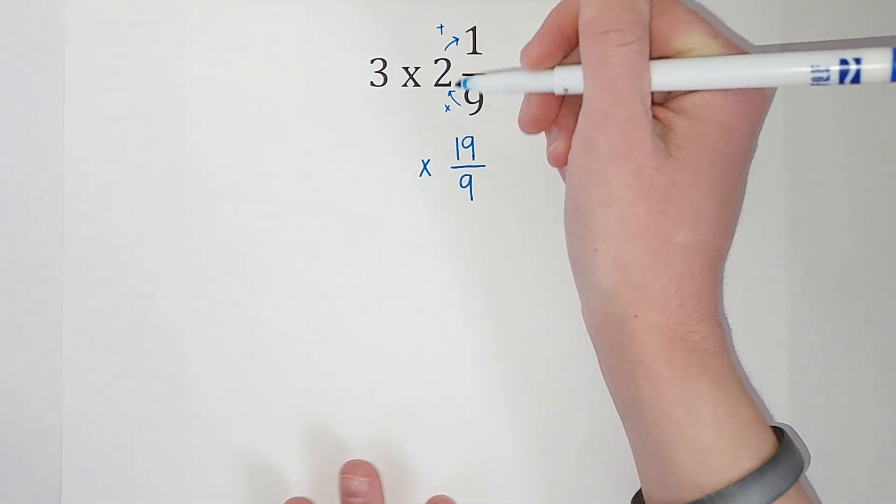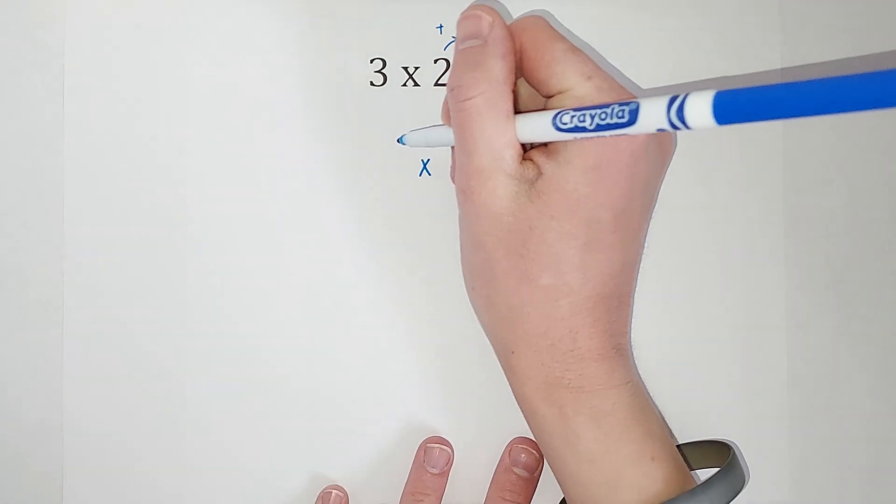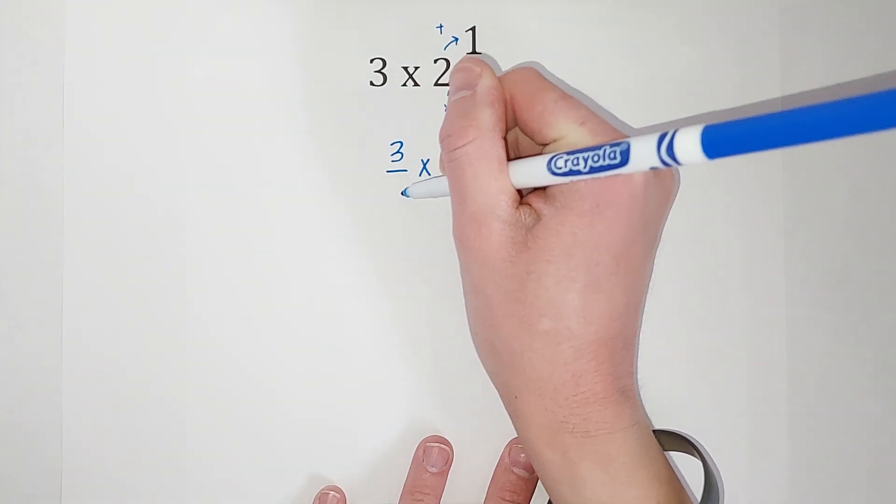This is being multiplied, and I want to make 3 look like a fraction. It doesn't look like a fraction right now, but I can always make a number look like a fraction by putting it over a 1. So 3 over 1.